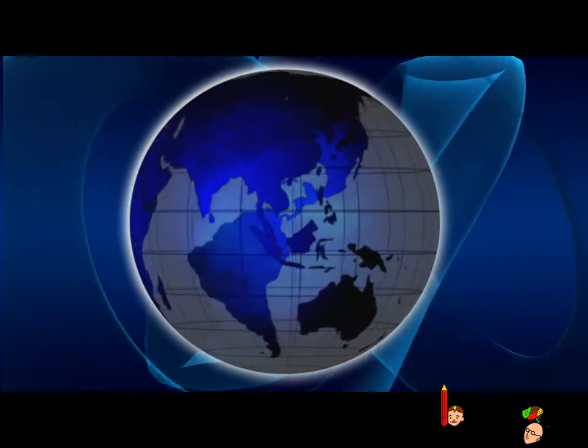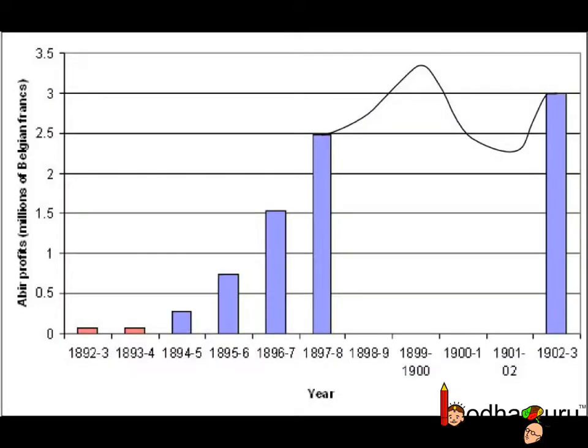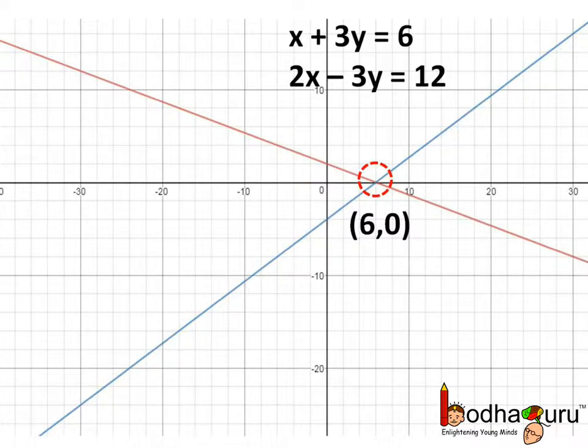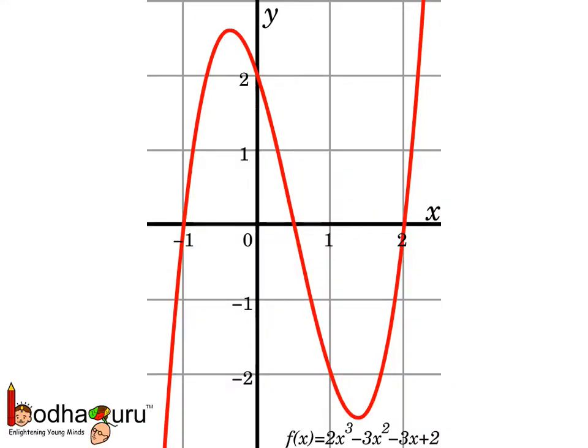Cartesian system is used to plot a graph like tracking the profit of a company. Even the graph we draw to find solutions of equations, root of polynomials, etc. are drawn using Cartesian coordinate system.